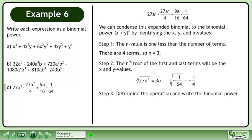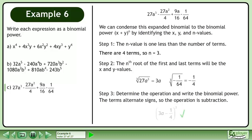In step 3, determine the operation and write the binomial power. The binomial power is 3a minus 1 over 4 raised to the power of 3.